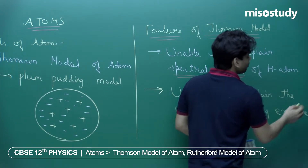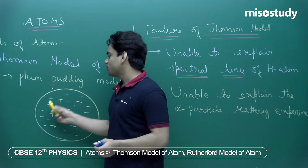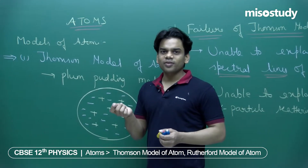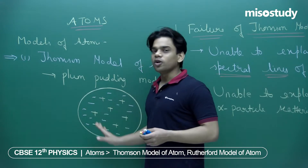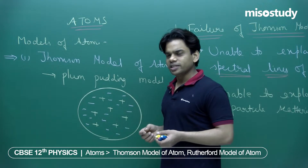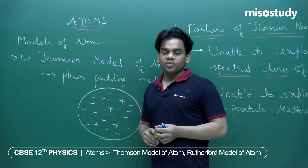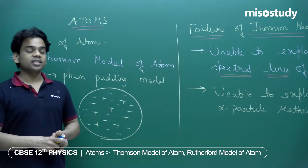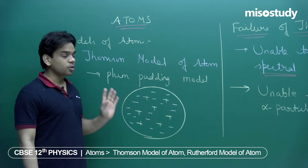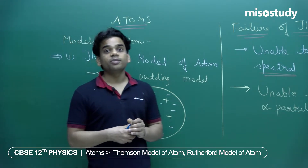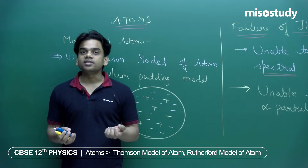Thomson took a layman's model — he treated the atom as a normal spherical structure with positive charges embedded in it, like seeds in a watermelon. The seeds represent positive charge, and the entire red portion of the watermelon represents the negative charge spread throughout the volume. The positive and negative charges are distributed such that the net charge on the atom is neutral.